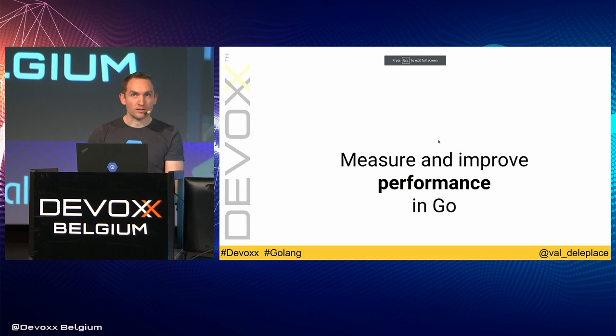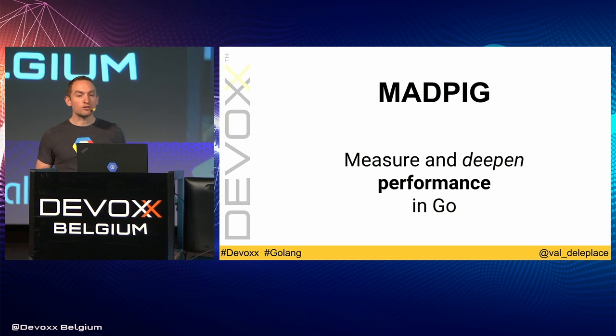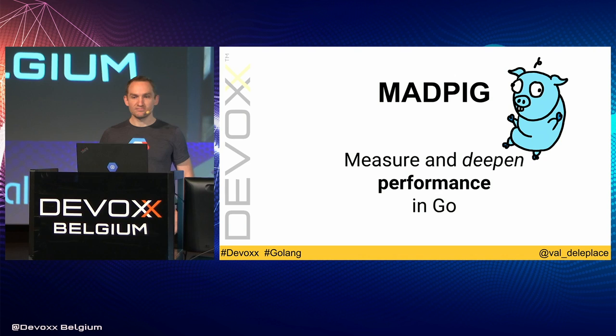This is the original title of my talk: Measure and Improve Performance in Go. If I cheat a little bit and replace the word 'improve' with 'deepen', I get this really cool acronym — MAD PIG. And I made a mascot for this talk: it's a mad pig, a pig that's a little crazy.